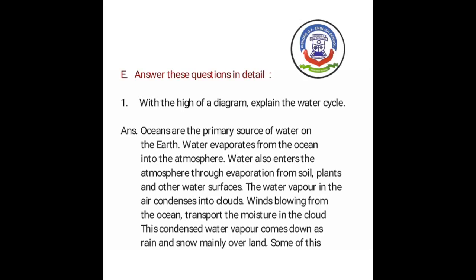First question: with the help of a diagram, explain the water cycle. (Ek akriti ki madad se, jal chakra ko samjhaiye.) The answer is: oceans are the primary source of water on the earth. (Mahasagar prithvi par paani ke prathamik strot hain.) Water evaporates from the ocean into the atmosphere. (Paani ka samudra mein se vatavaran mein baashpeeikaran hota hai.)